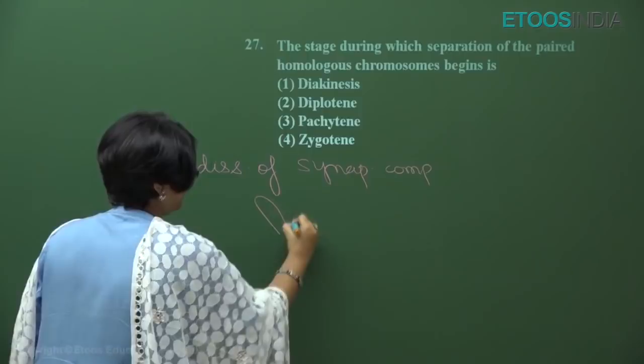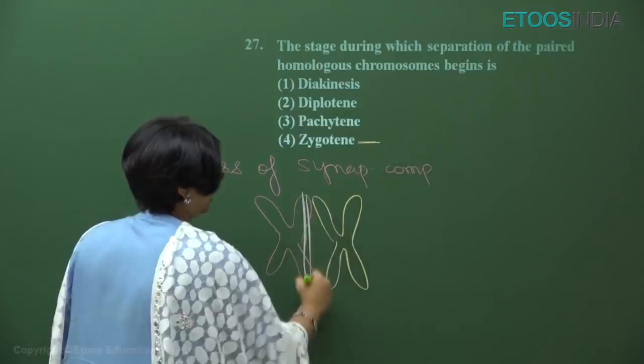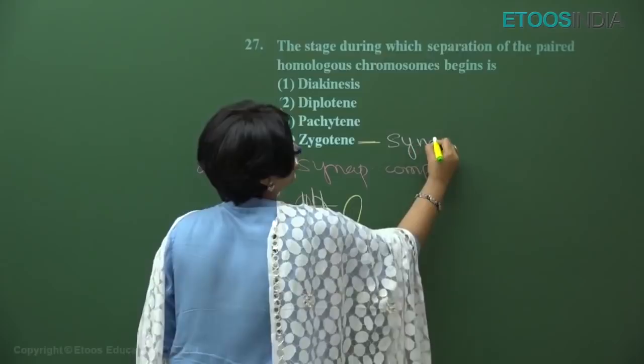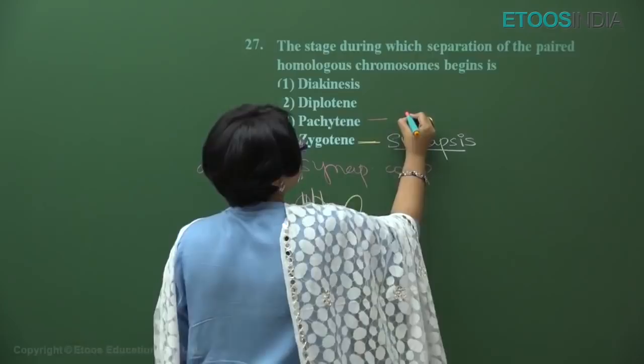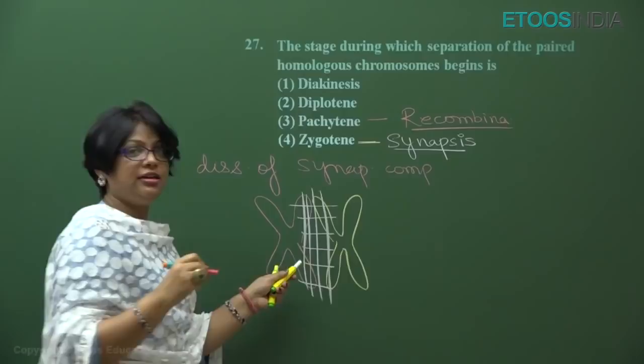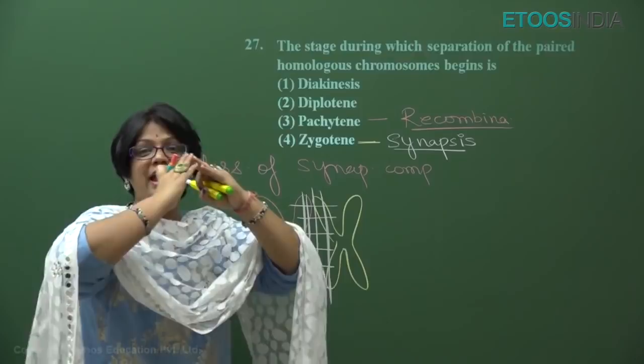If you remember, the two homologous chromosomes pair with a synaptonemal complex in the zygotene stage — that is synapsis. Then in the pachytene stage there is exchange of genetic material between non-sister chromatids of homologous chromosomes, meaning genetic recombination occurs. After this, the beginning of diplotene is characterized by dissolution of the synaptonemal complex, so both homologous chromosomes separate from each other except at the point where crossing over has taken place, which we call the X-shaped chiasmata.